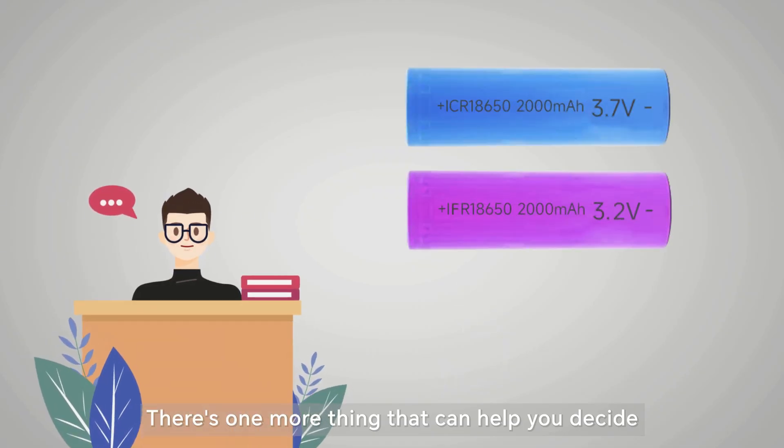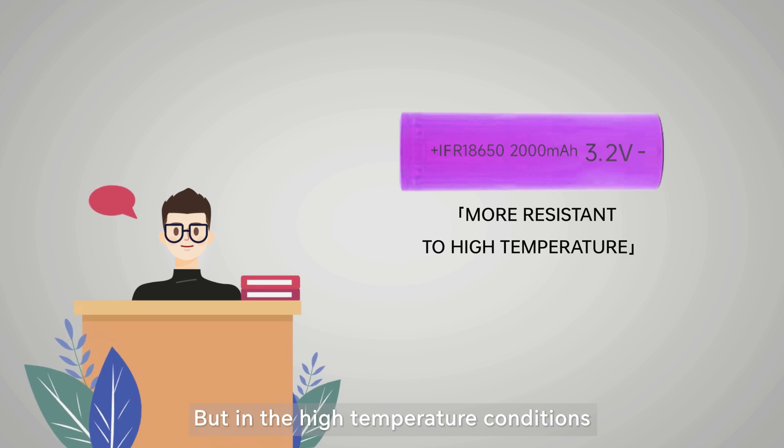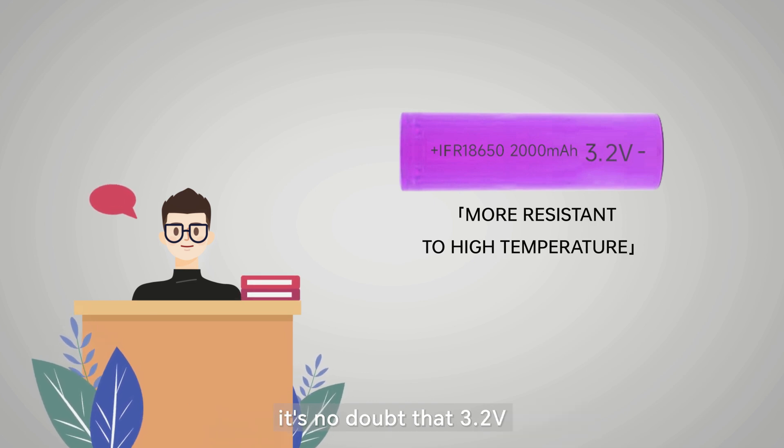There's one more thing that can help you decide. The 3.7V Li-ion battery works better in low-temperature conditions. But in high-temperature conditions, it's no doubt that 3.2V LiFePO4 battery is better.